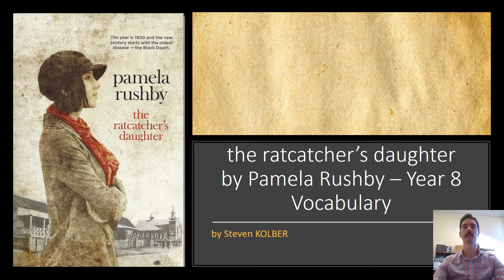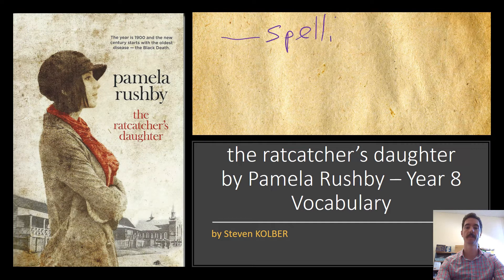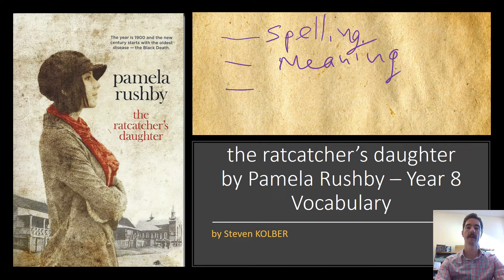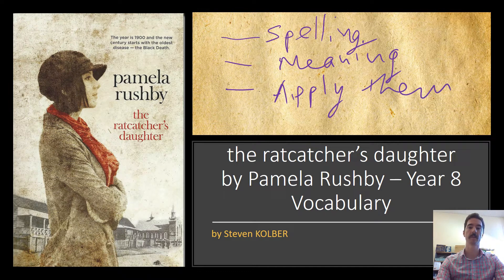This is the vocabulary for 'The Rat-Catcher's Daughter,' year eight, a novel by Pamela Rushdie. Your basic goal is to do three separate things across the unit: you're going to be learning how to spell the words, learning what they mean and understanding them in context, and being able to apply them to a story. For this video, all you need to do is find these words in your copy of the novel, circle them, and write a definition.